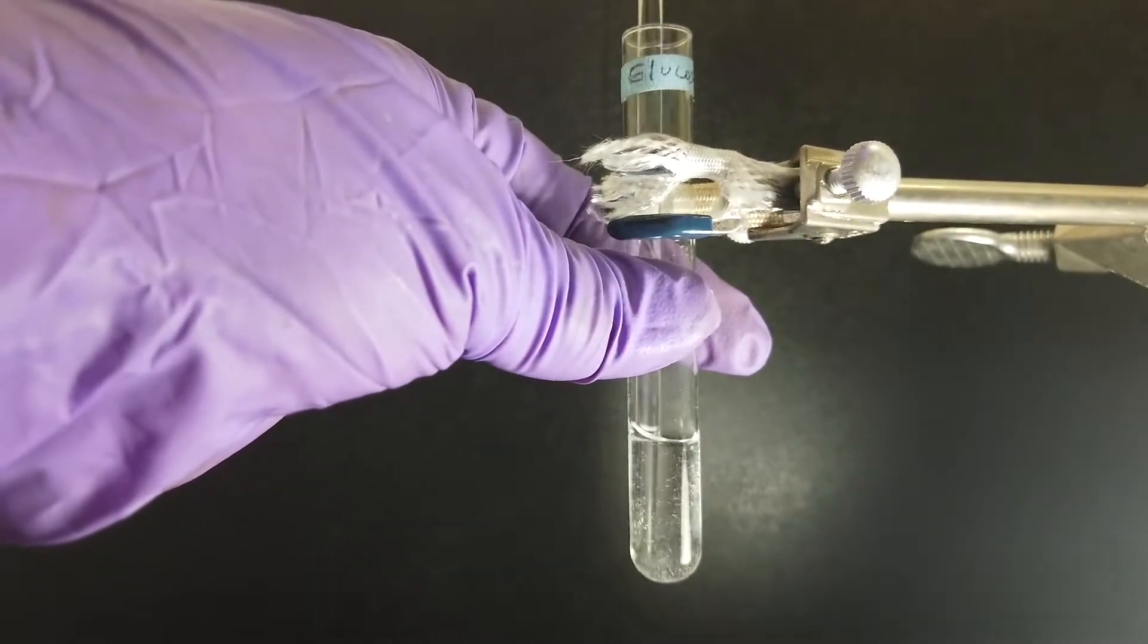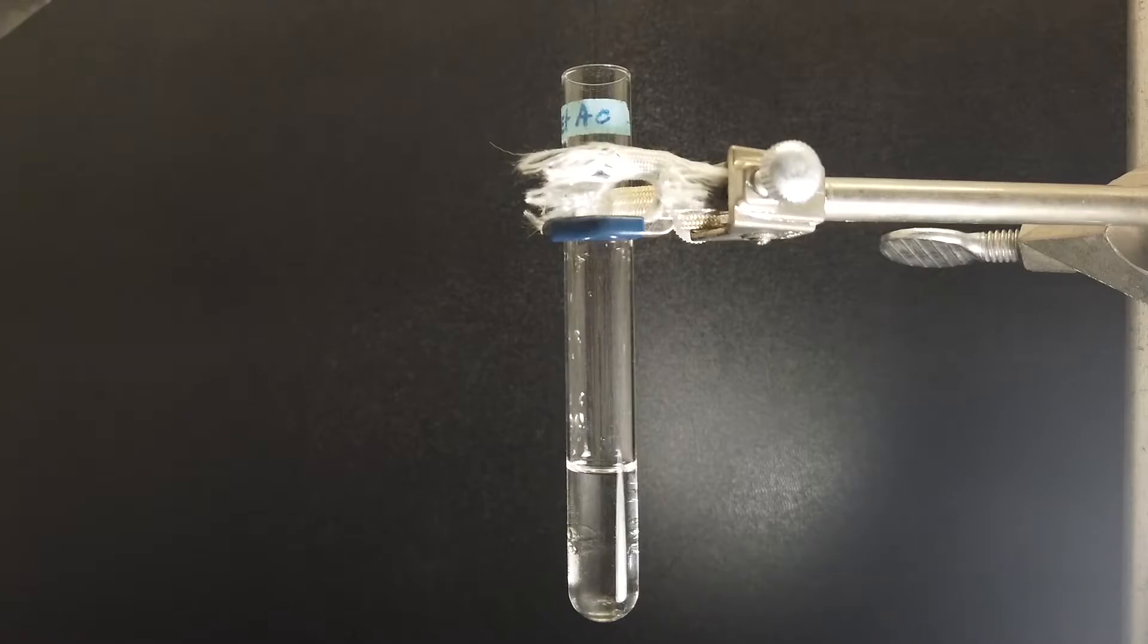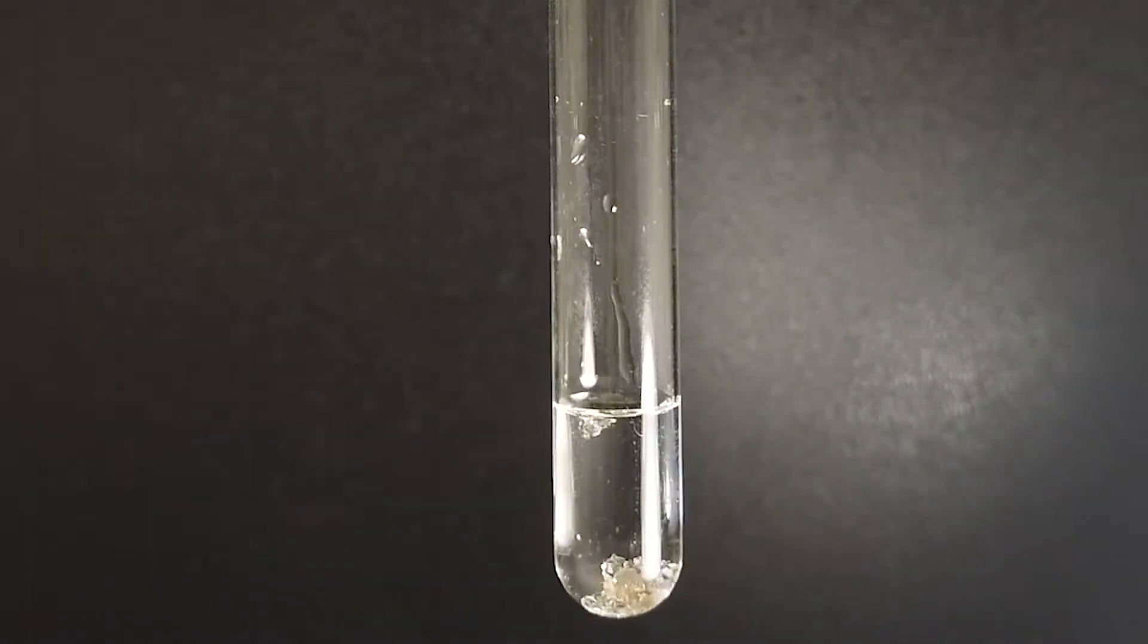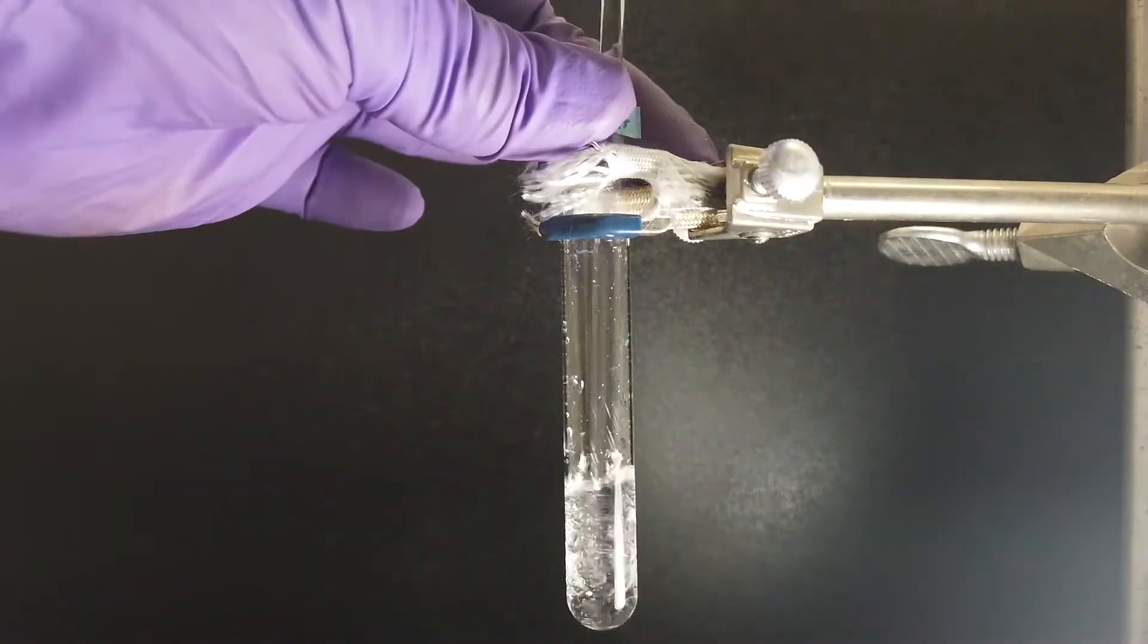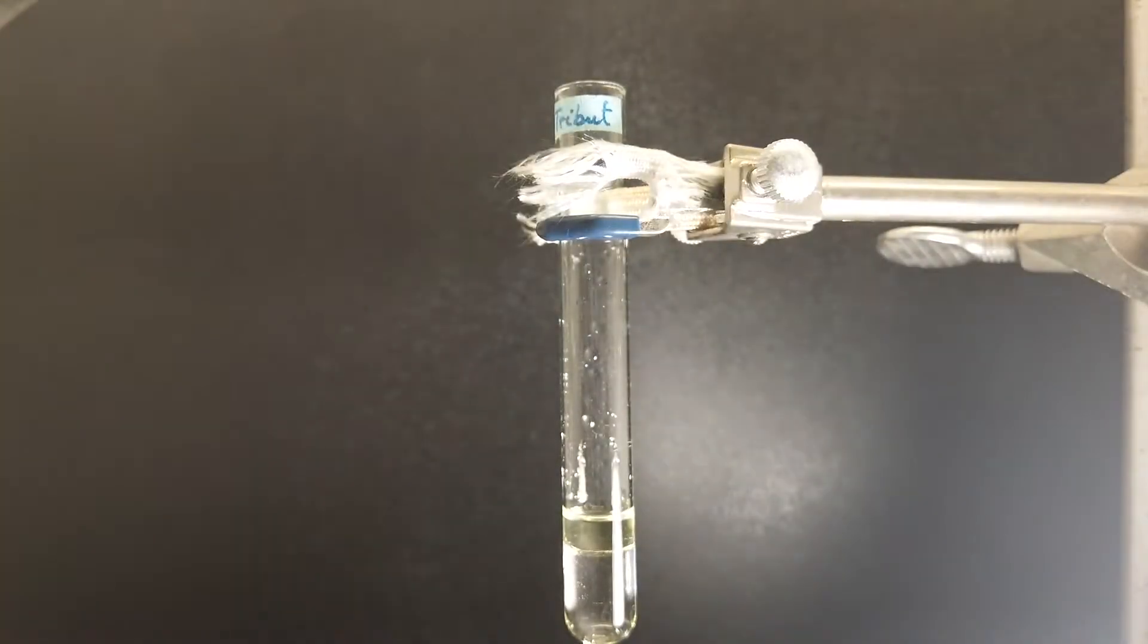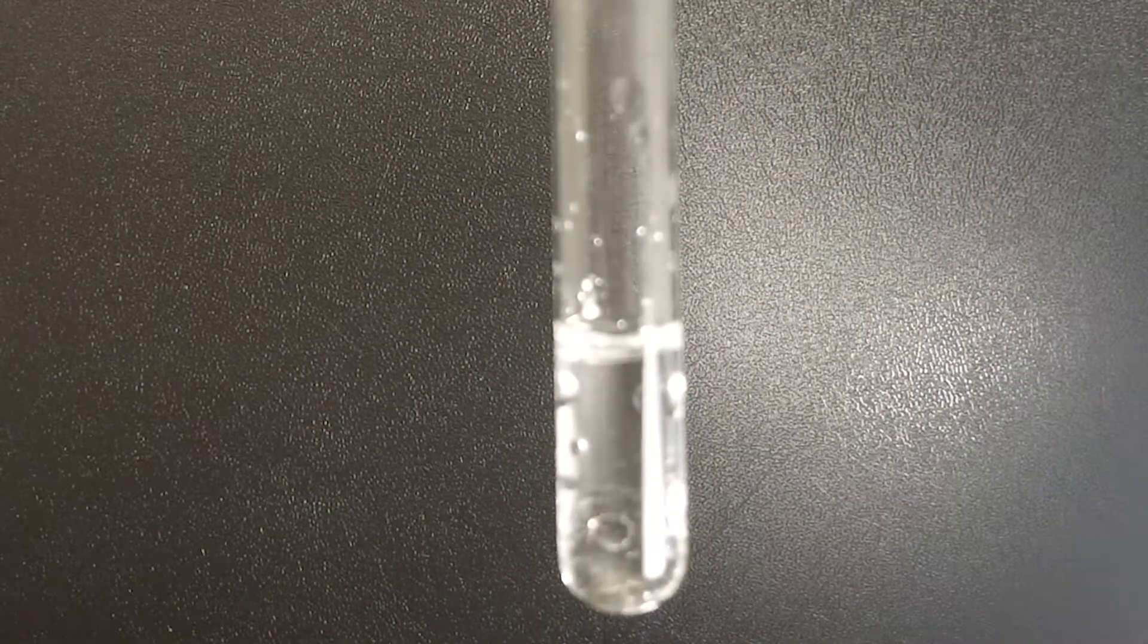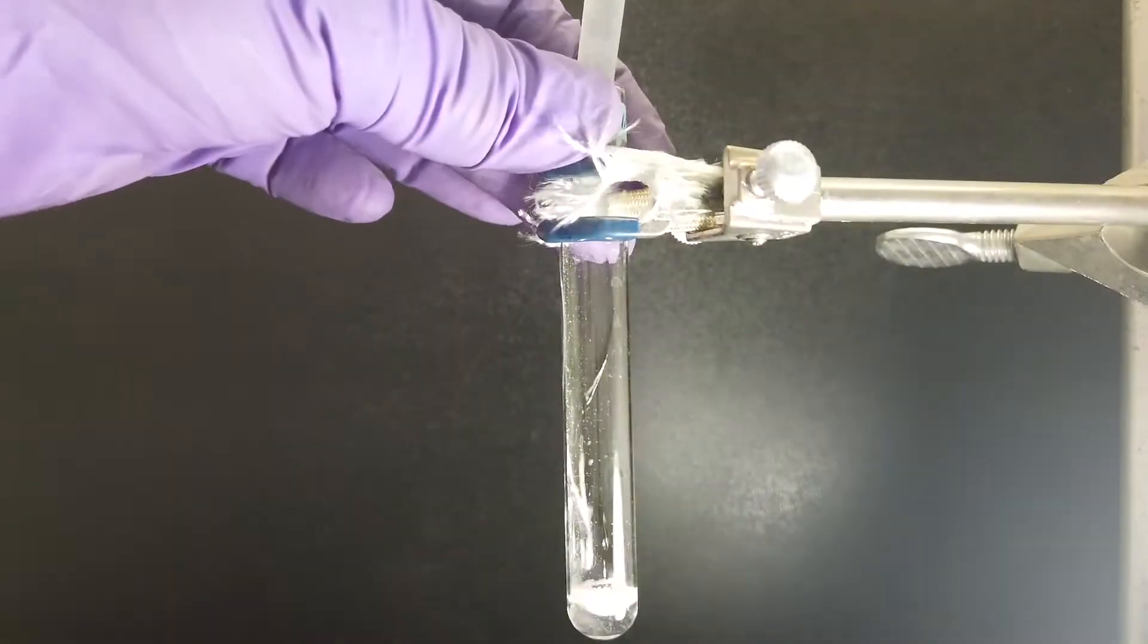Note that some of the chemicals we are testing will be solids and others will be liquids. First is solubility in water. Here is glucose, ethyl acetate, toluene, 4-ethylphenol, benzyl alcohol, tributylamine, p-anesidine, ethyl benzoate, paranitrobenzoic acid, acetanilide.